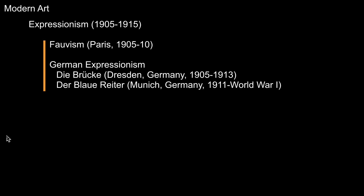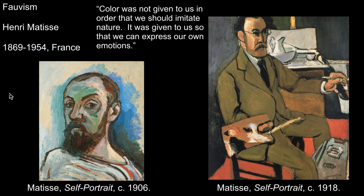Henri Matisse contributed to Fauvism, an early 20th century movement in Paris that originated from a derogatory term, fauve, meaning beast, that a critic used to describe the art of Matisse and others. Matisse was interested in using color to express emotion, and he wrote: 'Color was not given to us in order that we should imitate nature. It was given to us so that we can express our own emotions.' This is a very different approach to art-making than what we saw with David or even with Monet. Color does not need to match nature; it is instead to be used for expression.